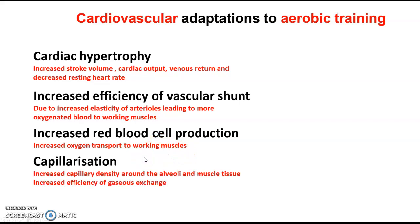We also have capillarization. Capillaries allow gaseous exchange to take place. If we take part in aerobic exercise such as HIIT and continuous training, we increase the density of capillaries around the alveoli. Oxygen is transferred from the alveoli into the blood, which is carried towards the working muscles. If we get a more dense formation of capillaries around the working muscles and the alveoli, we increase our efficiency of gaseous exchange — getting more oxygen where we need it and more carbon dioxide away from where we don't.